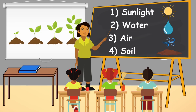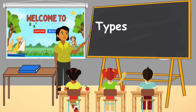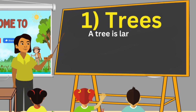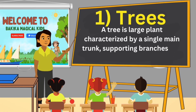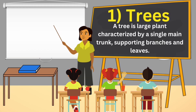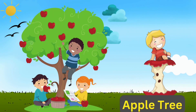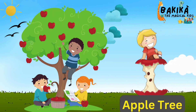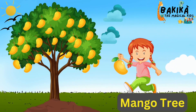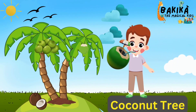Soil is also needed for plants to grow healthy. Let us get started! A tree is a large plant characterized by a single main trunk supporting branches and leaves. This is an apple tree. This is a mango tree. This is a coconut tree.